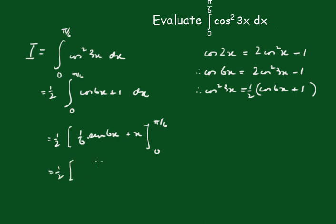Which is, I'm putting the pi upon 6 in there, you're going to get the sin of pi which is 0. And this is going to be pi upon 6. And of course this will be 0. Which gives you the final result of pi upon 12.